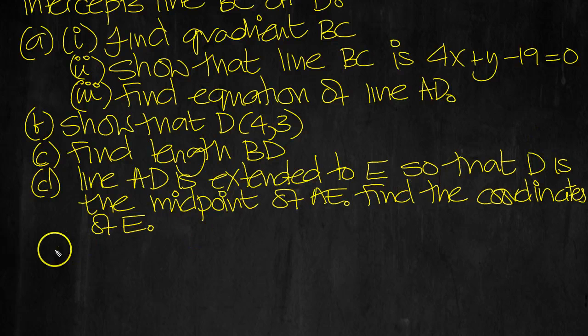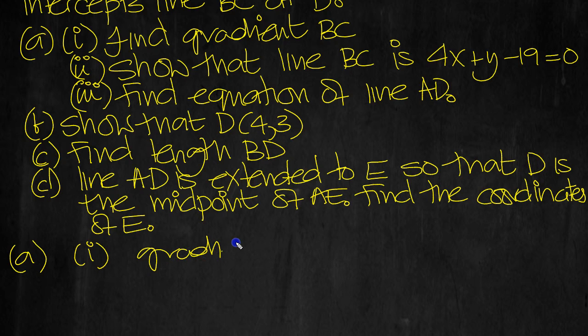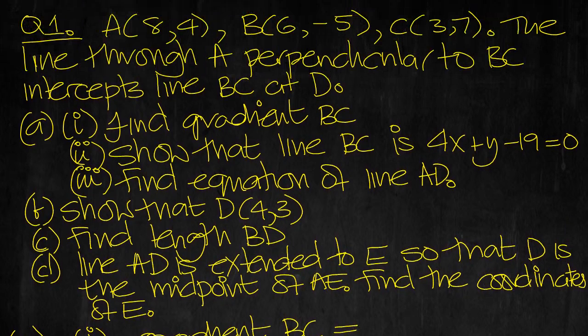So we've got these points here. The gradient of BC is equal to the increase in Y divided by the increase in X between B and C. So the increase in Y is 7 minus minus 5, double minus as a plus.